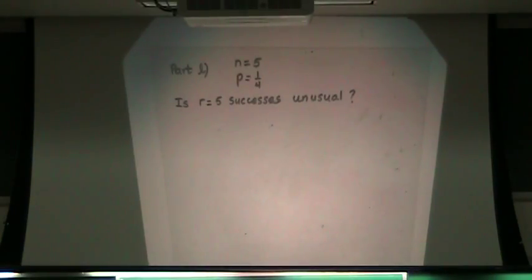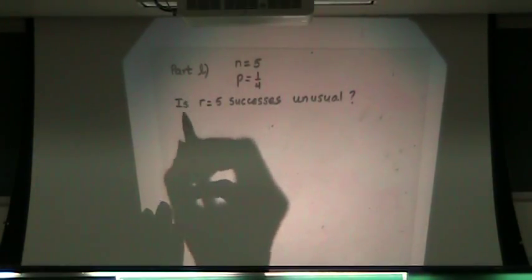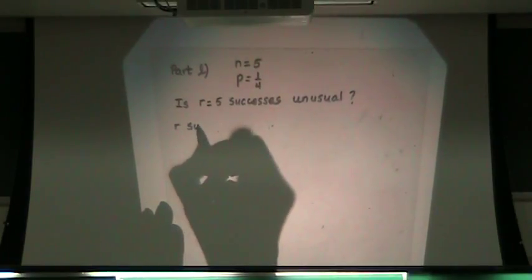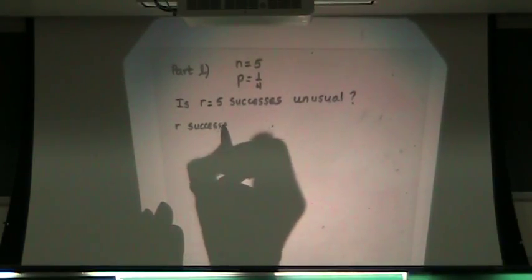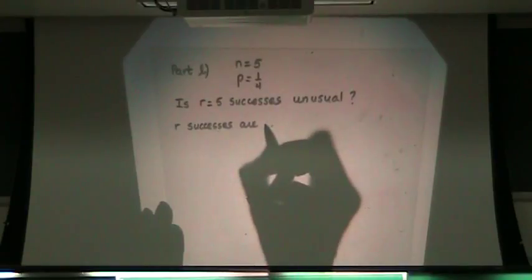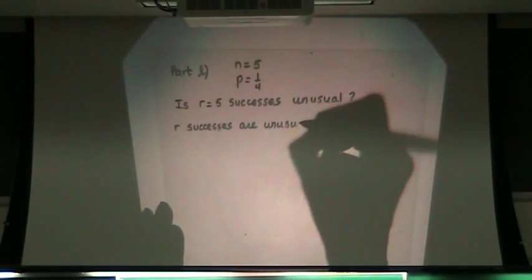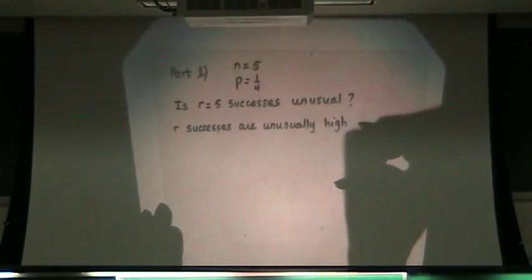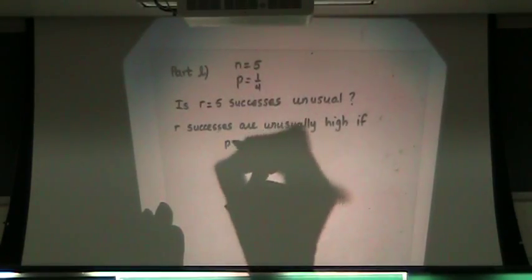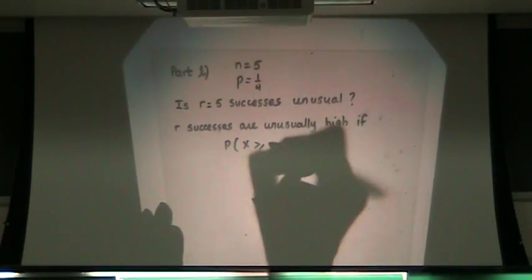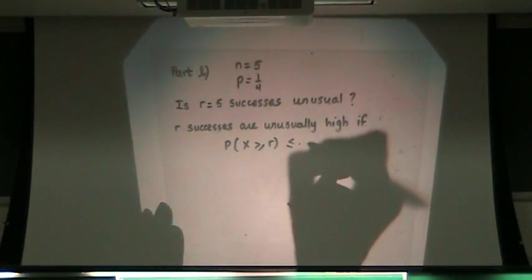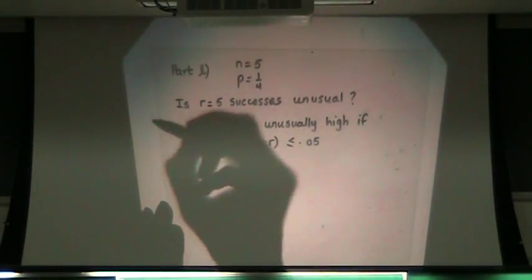So we have a rule that says r successes are unusually high if the probability of X greater than or equal to r is less than or equal to 0.05. That's the rule.